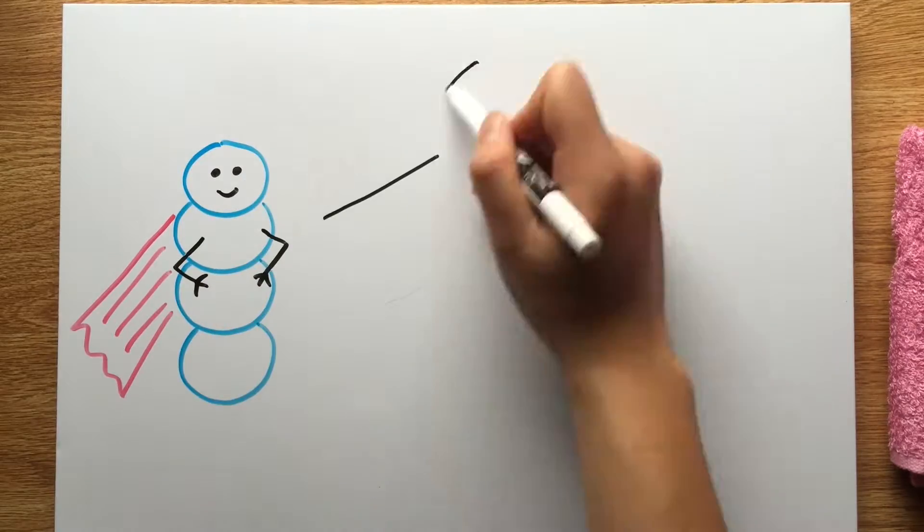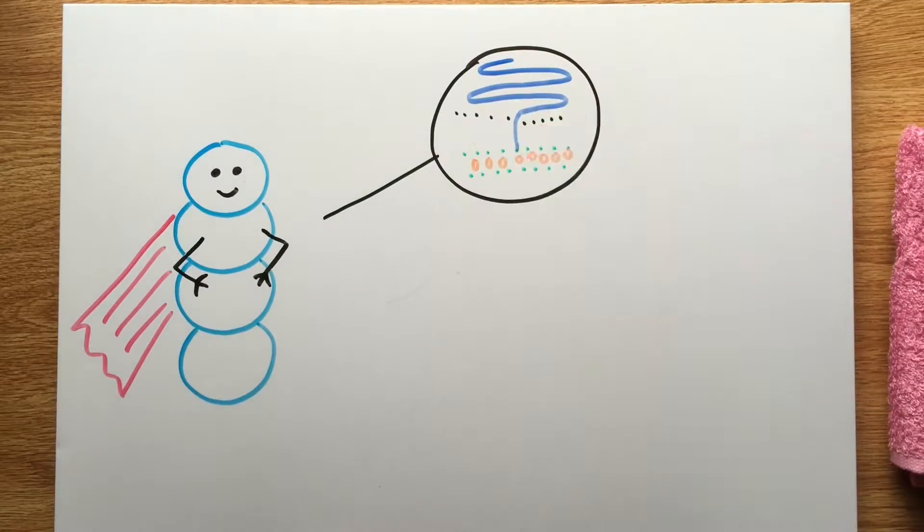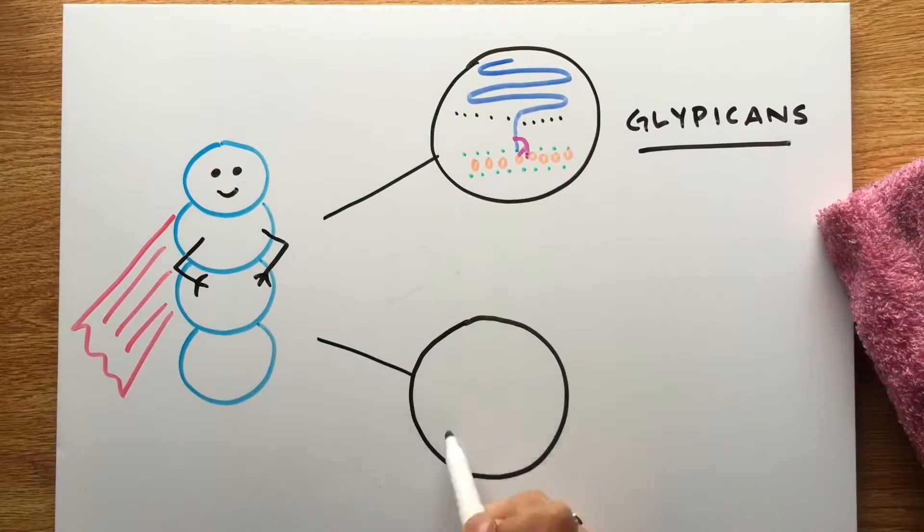The glycocalyx is attached to the endothelium by backbone molecules like glipocans and syndicans, which themselves are attached to these things called GAGs, or glycosaminoglycan chains.